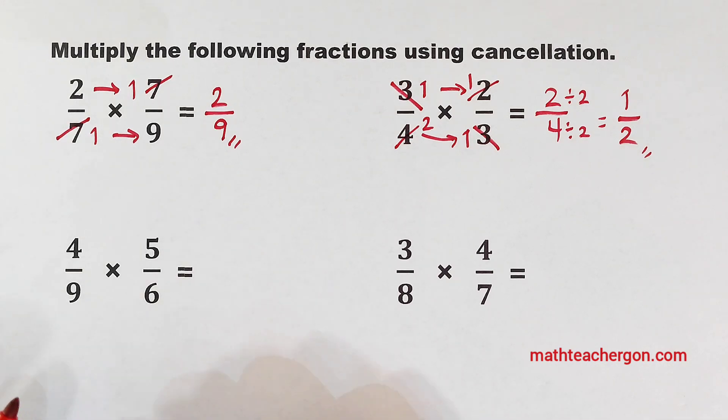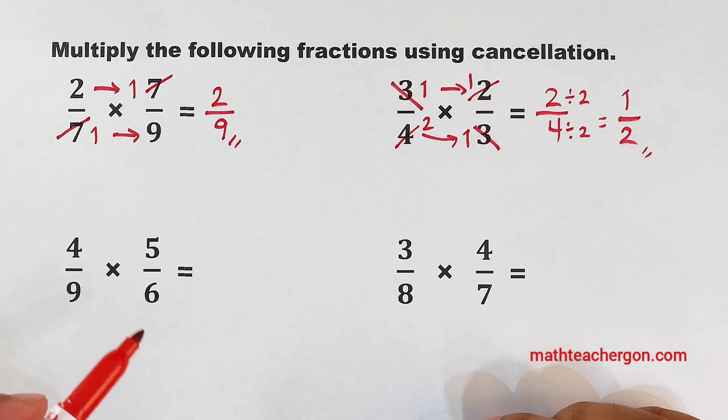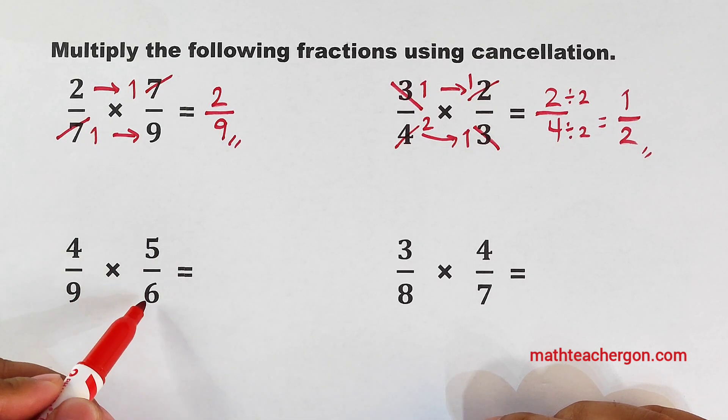Now let's continue with item number 3. 4 over 9 times 5 over 6. So which number can be canceled here? So 5 and 9 is not possible. 5 and 6, 4 and 6 is possible.